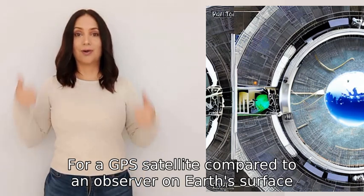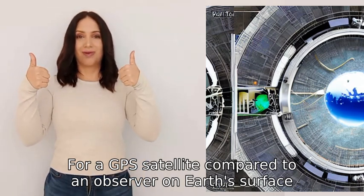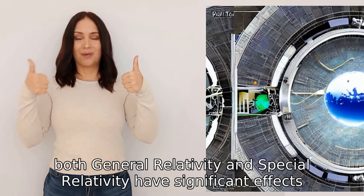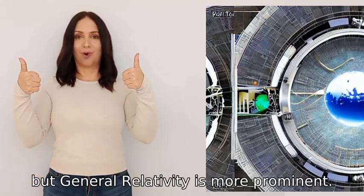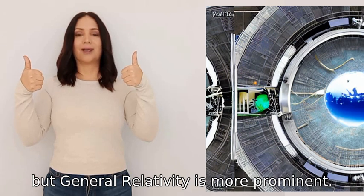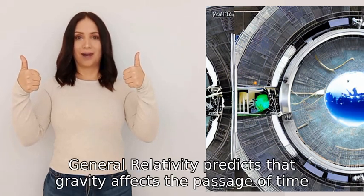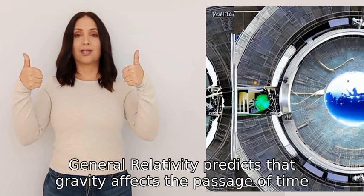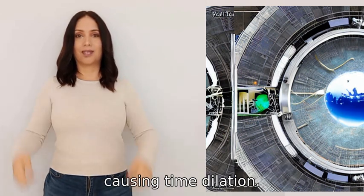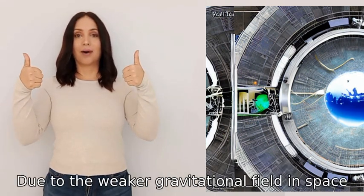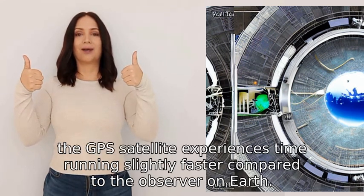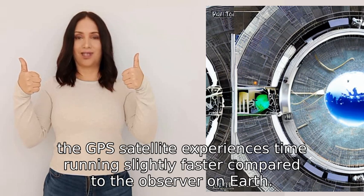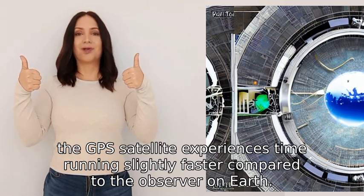For a GPS satellite compared to an observer on Earth's surface, both general relativity and special relativity have significant effects, but general relativity is more prominent. General relativity predicts that gravity affects the passage of time, causing time dilation. Due to the weaker gravitational field in space, the GPS satellite experiences time running slightly faster compared to the observer on Earth.